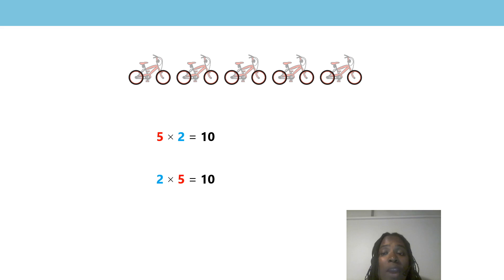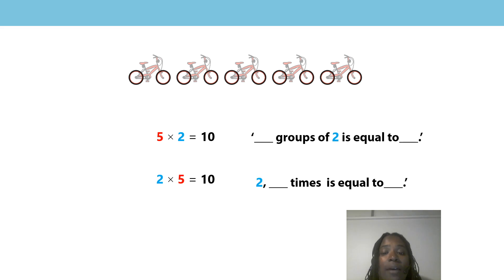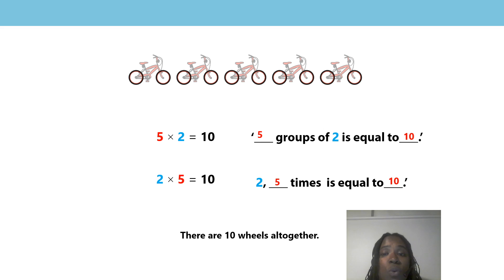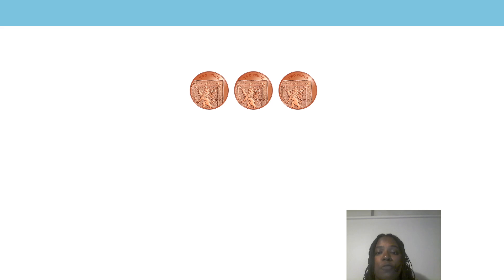I have two stem sentences to help us. Let's say them together. 5 groups of 2 is equal to 10 — because I can see that there are 5 bicycles and each bicycle has 2 wheels. 2 five times is equal to 10 — 2 is the group size, 5 is the number of groups, there are 10 wheels altogether. Great job! You're getting really good at this.